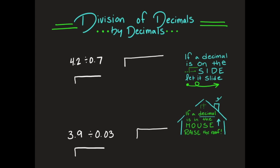Today we're going to do some division of decimals by decimals. If we look at our very first one over here, we have 4 and 2 tenths divided by 7 tenths. I'm going to go ahead and write that down in the way that we see it. We write our division problems from right to left, so I have 4 and 2 tenths divided by 7 tenths.